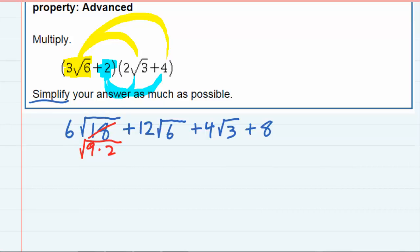And so I can pull out the nine as a three. And since the six is already out there, six times three gives me an 18 square root of two.